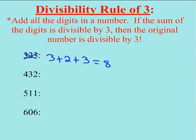For 432, you add 4 plus 3 plus 2. That equals 9, and 3 goes into 9, so 3 goes into 432.